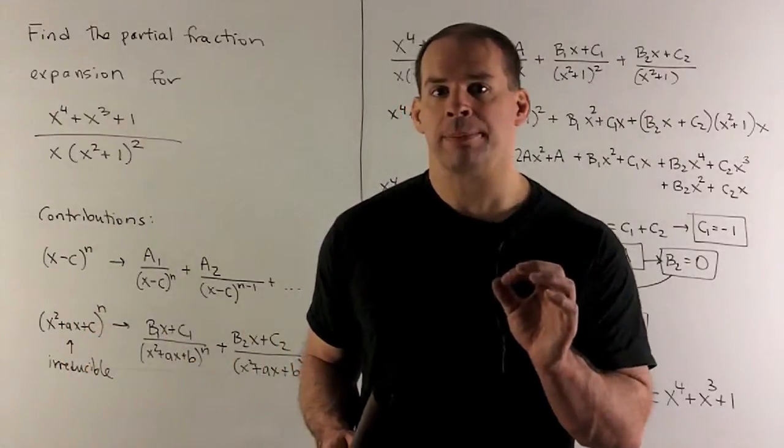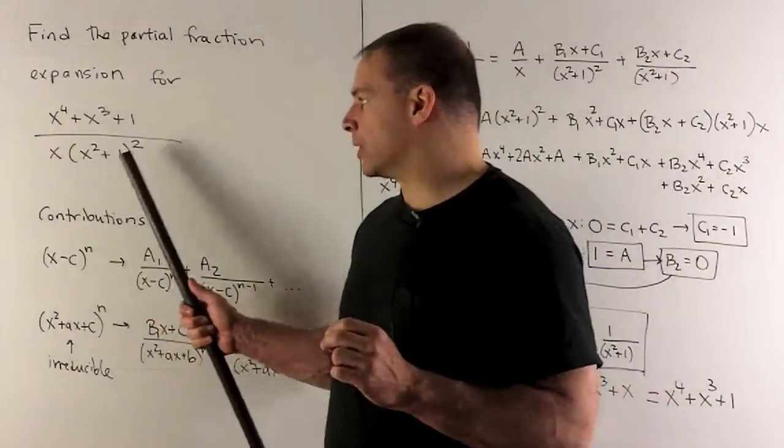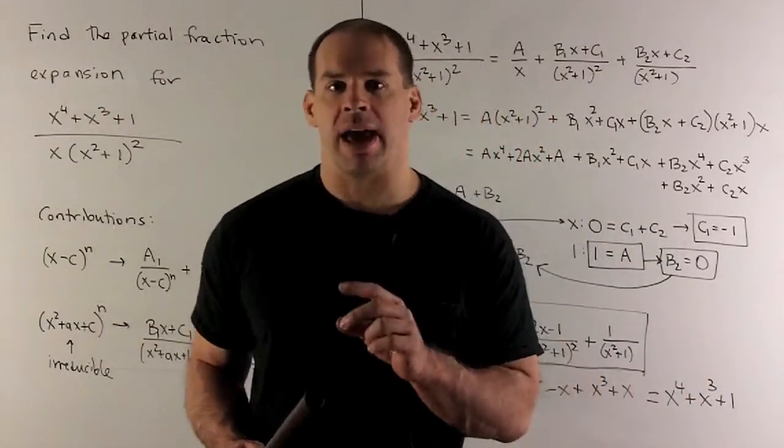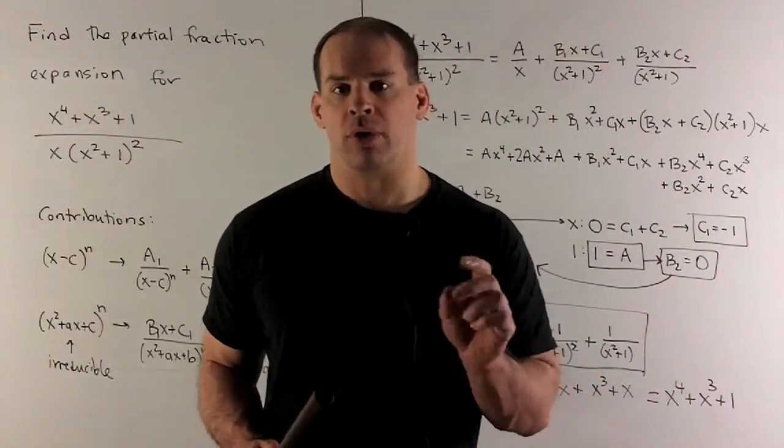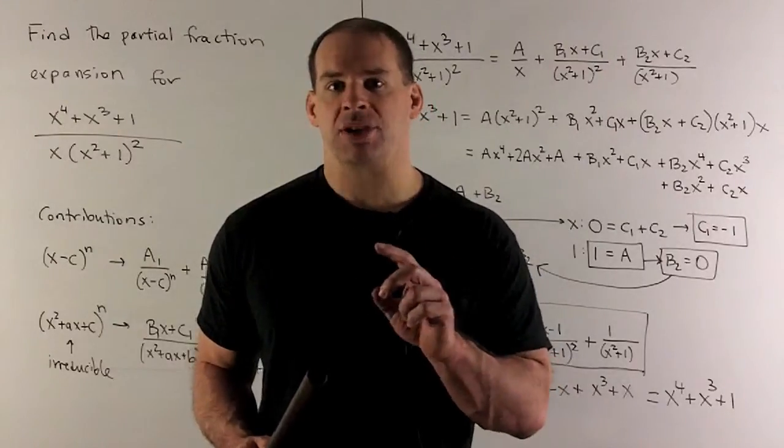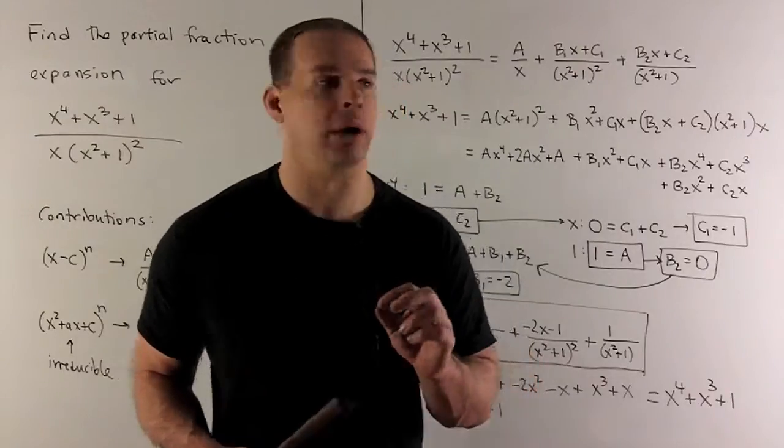For the irreducible quadratic, that's going to be our x squared plus 1 squared. We're going to get two terms. We'll have b1x plus c1 over x squared plus 1 squared, and b2x plus c2 over x squared plus 1.